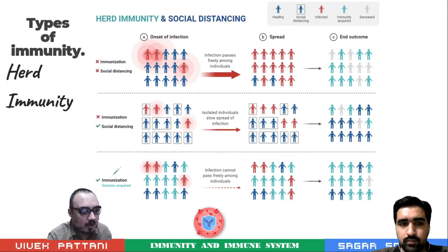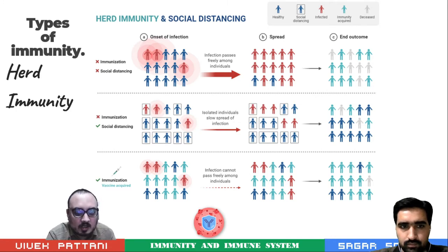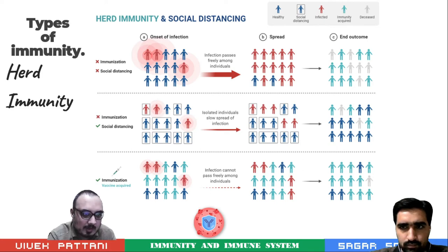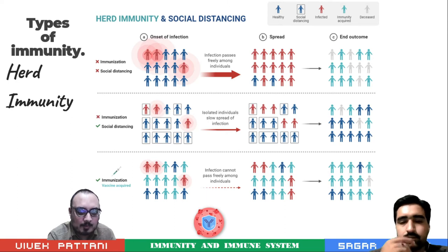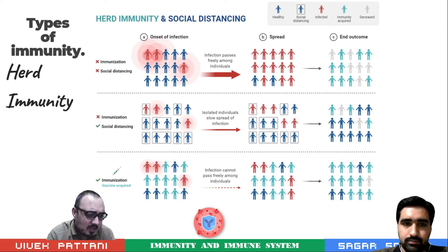Now comes the concept of herd immunity. Herd immunity is defined as the overall immunity of a community or herd towards a pathogen, and plays a vital role in preventing epidemic diseases. If herd immunity is good, that means a large population of the community are immune towards a pathogen, hence epidemics are less likely to occur and eradication of the disease may be possible.